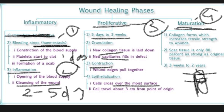The fourth and final phase is maturation, which has a time period of three weeks to two years. The collagen that was formed starts to combine and form chains, becoming stronger. However, the newly formed tissue is only about 80% as strong as the original tissue, which is 100% strong. This completes the wound healing phases — also called wound healing process or wound healing stages.